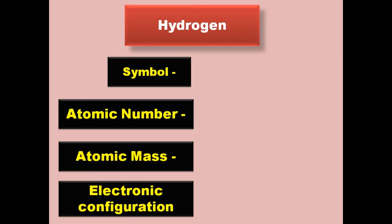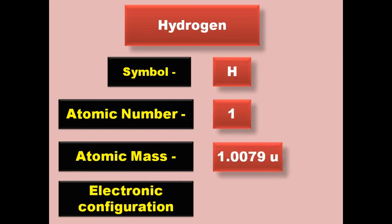The first element of the periodic table is hydrogen. Its symbol is H, atomic number 1, atomic mass 1.0079, electronic configuration 1s1. Hydrogen is a non-metal and exists in gaseous form at room temperature.